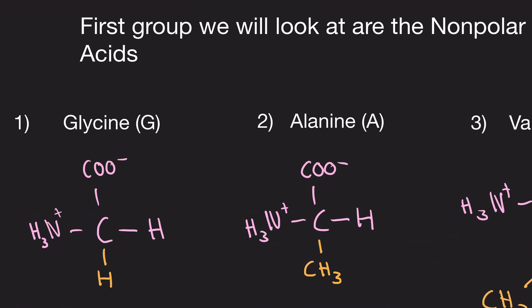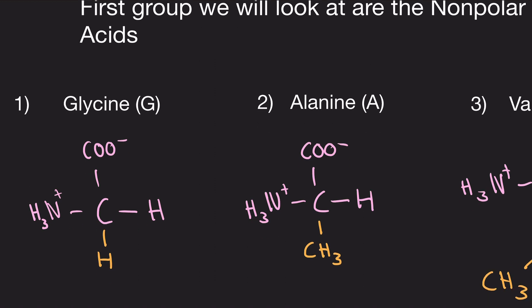The first one we have is glycine, denoted as a G. Glycine has the R group as H, or hydrogen. That's it.